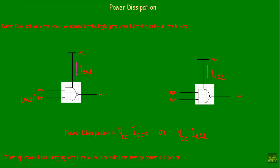In this video I will talk about two important definitions related to our logic families. The first one is power dissipation and the second one is speed power product. So what is power dissipation?